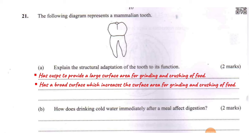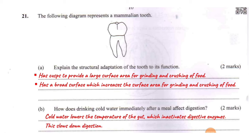How does drinking cold water immediately after a meal affect digestion? The cold water lowers the temperature of the gut. Digestion, like many processes in our body, is controlled by enzymes which are sensitive to temperature changes. When the temperatures are lower, the enzymes are going to be inactivated, which will slow down the rate of digestion.